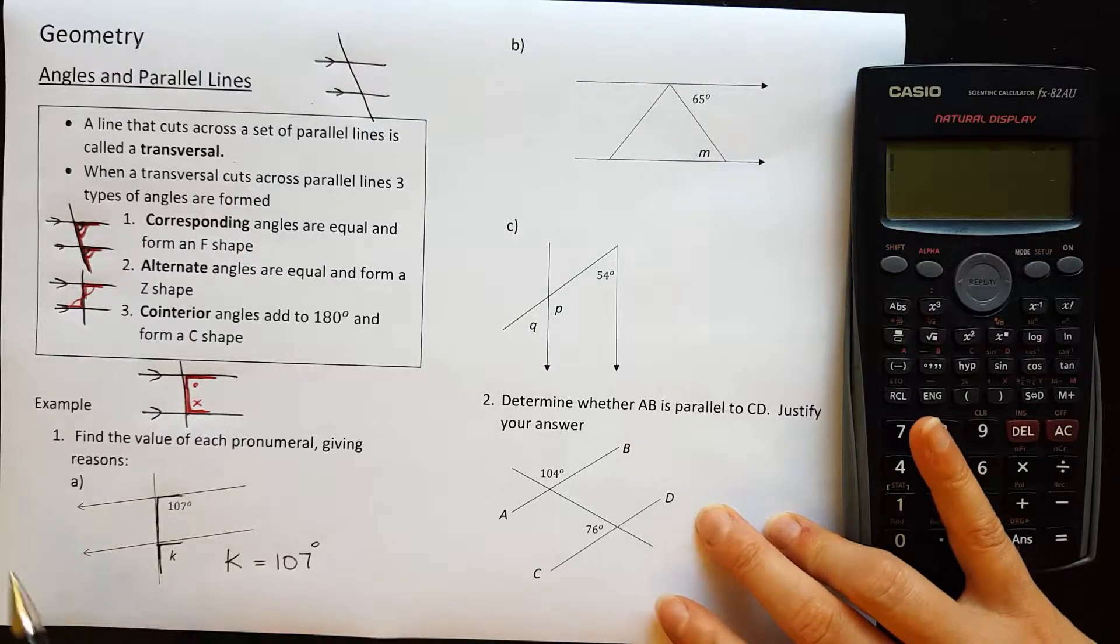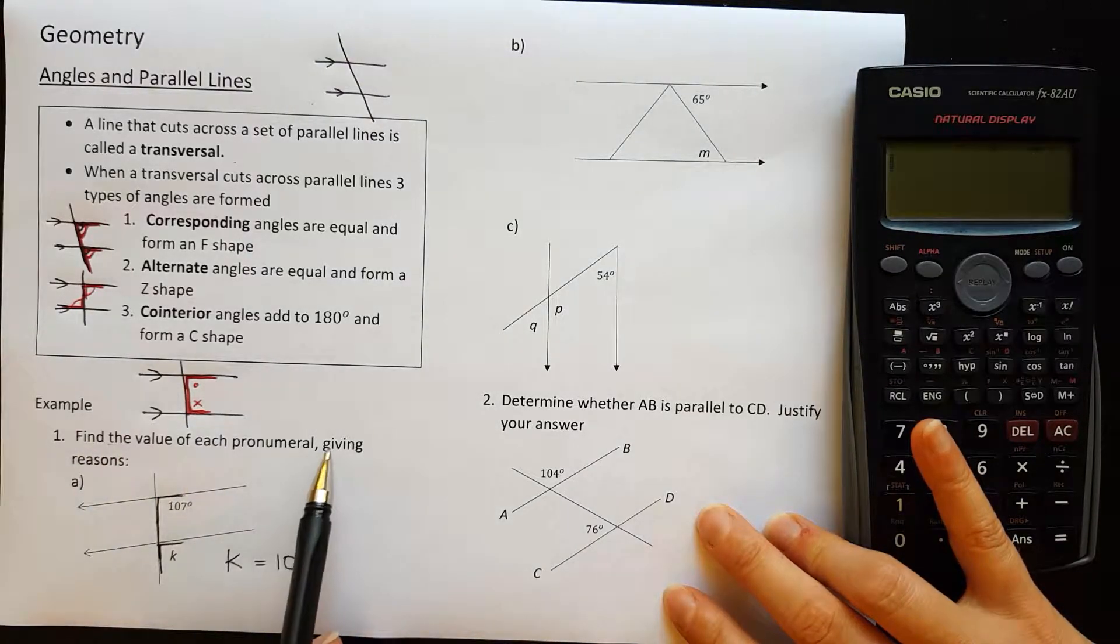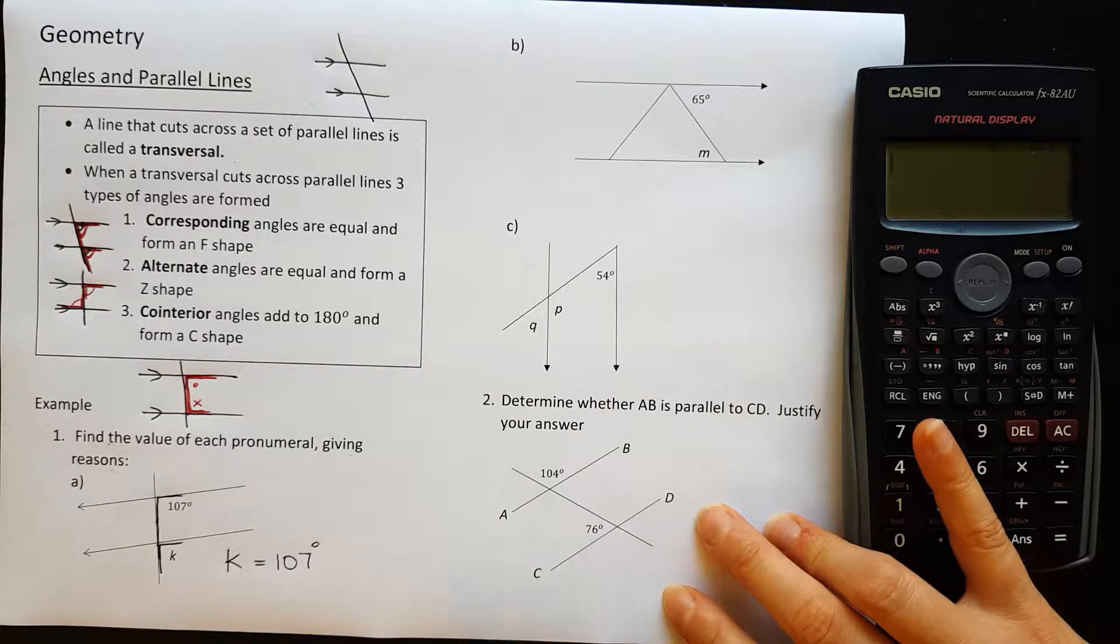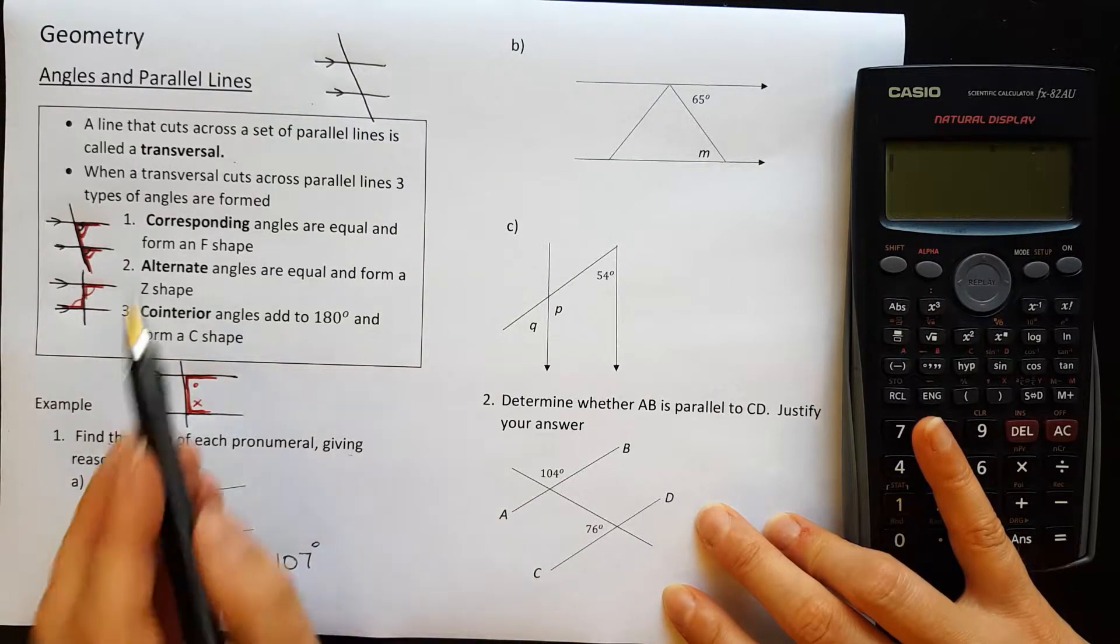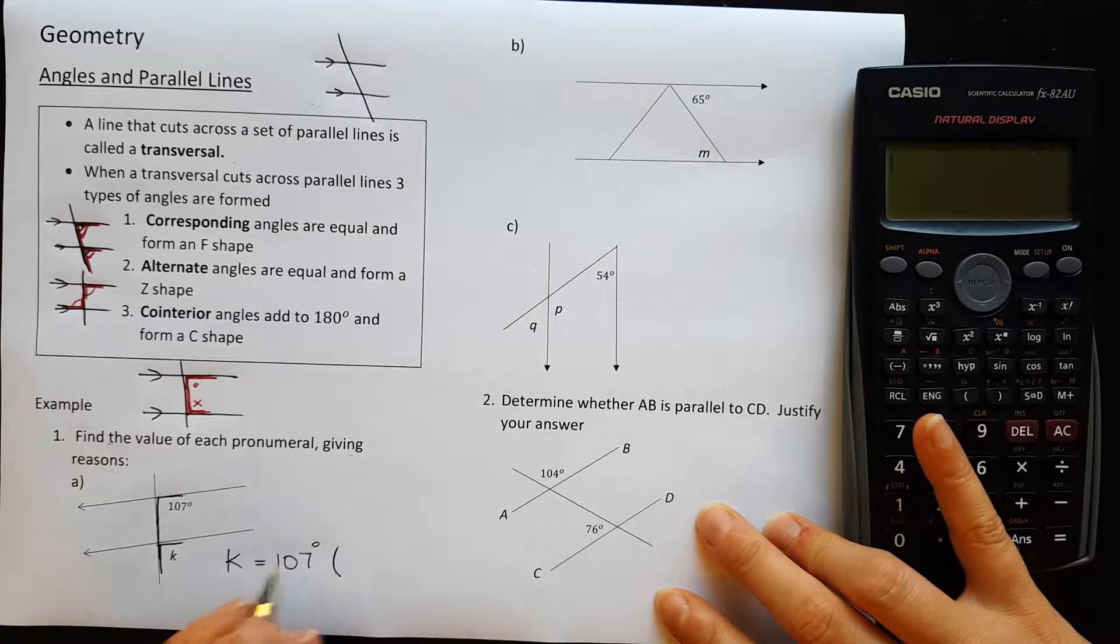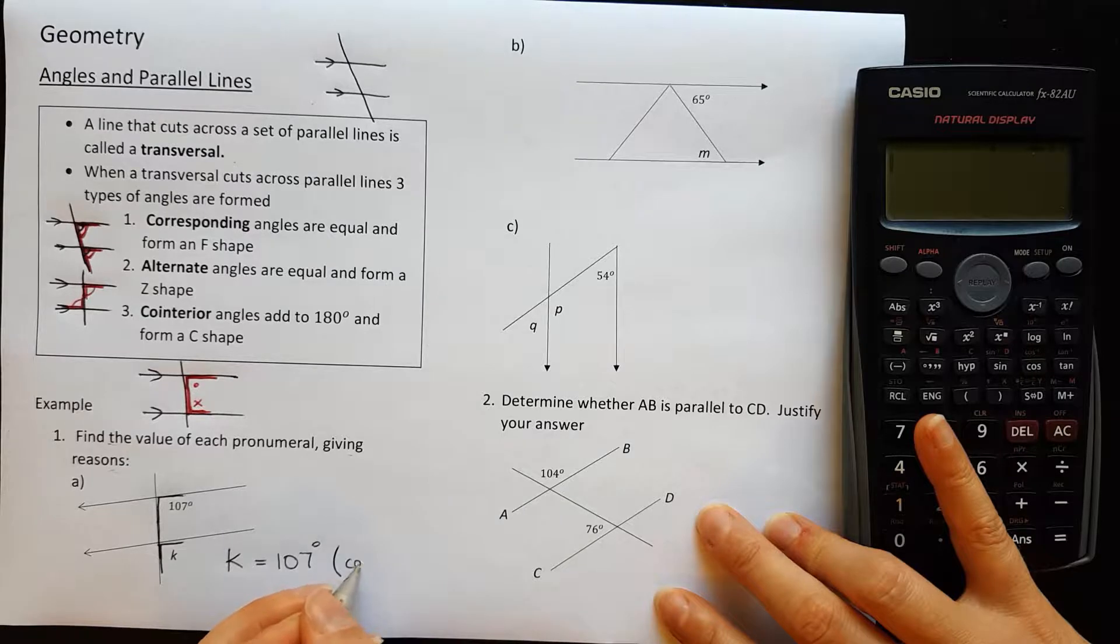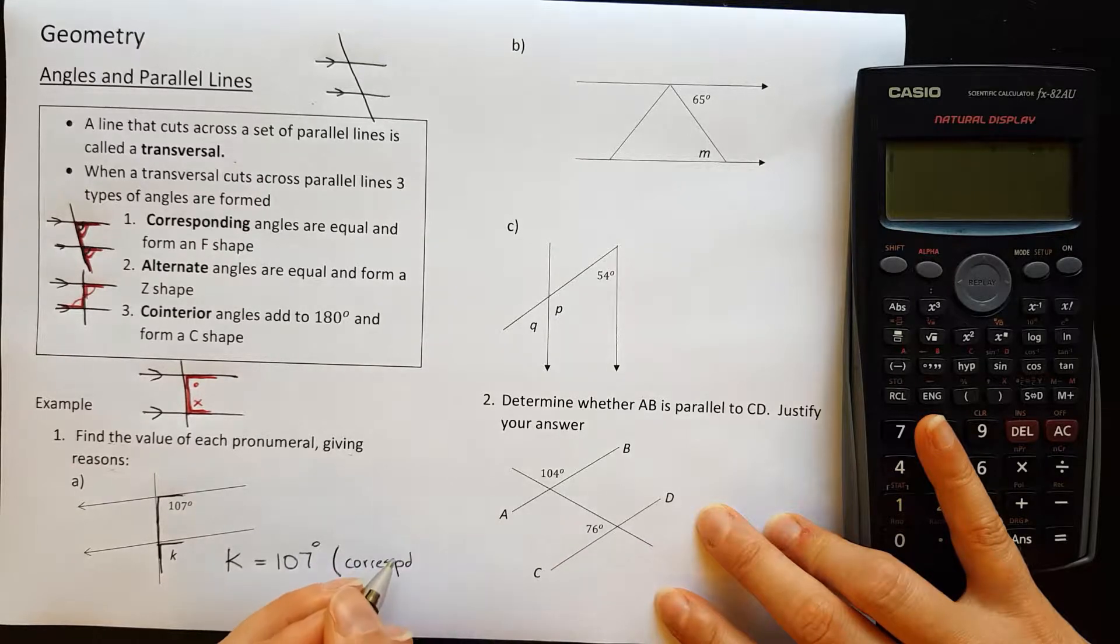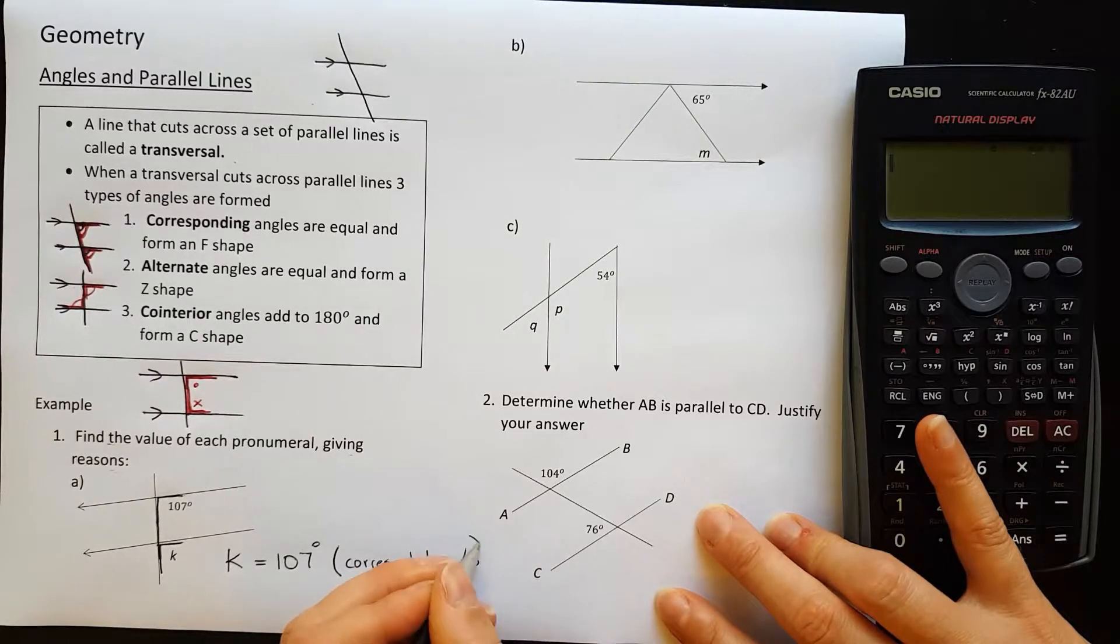So that means that K is equal to 107 degrees. Now what I'd like you to practice with this is it says here giving reasons. So I want you to practice, once you've identified which of the three rules it is, to write that rule in brackets afterwards. So the rule for this one was corresponding angles.